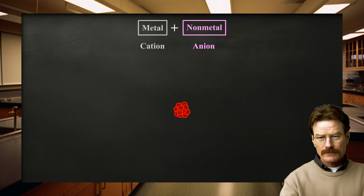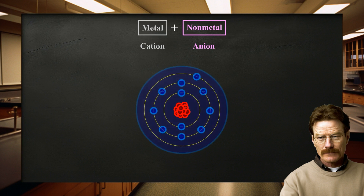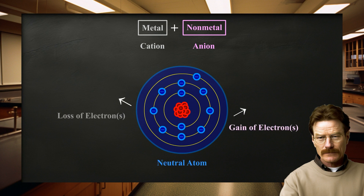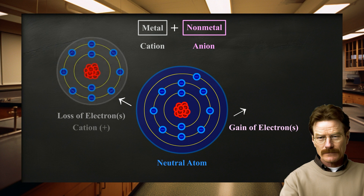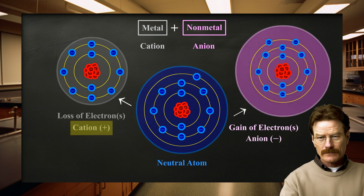The nucleus of an atom is unchanged by chemical processes, but some atoms can readily gain or lose electrons. If electrons are removed from or added to an atom, a charged particle called an ion is formed. An ion with a positive charge is a cation, and a negatively charged ion is an anion.